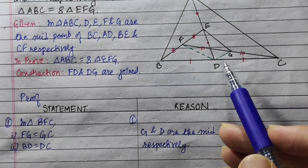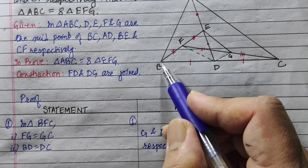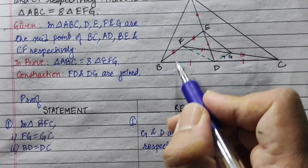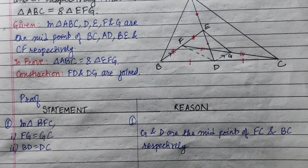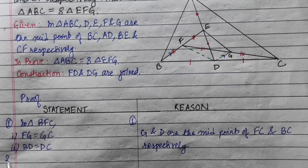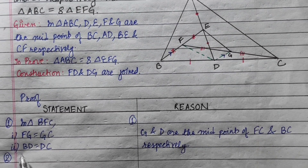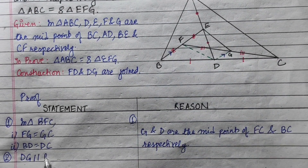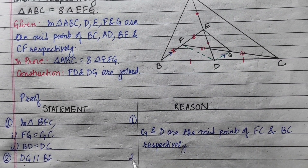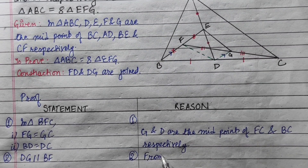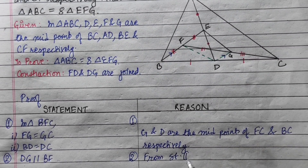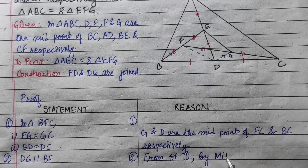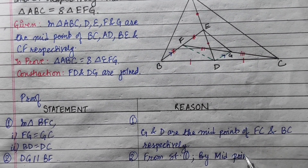So GD would be parallel to BF. GD is parallel to BF by the midpoint theorem.